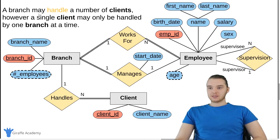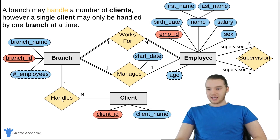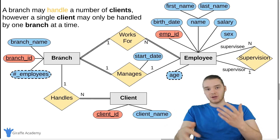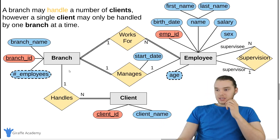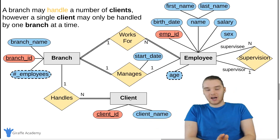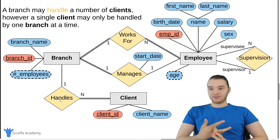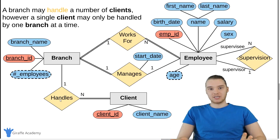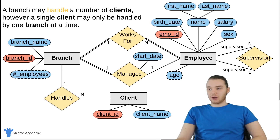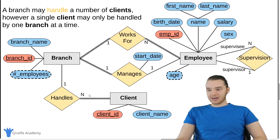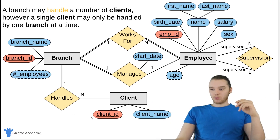Over here we have another relationship: a branch may handle a number of clients; however, a single client may only be handled by one branch at a time. So we have a relationship between branch and client. The client has total participation — every client must be handled by a branch. But the branch has partial participation — not all branches need to have clients. For example, a corporate branch or R&D branch might not work with clients. The cardinality: a branch can handle any number of clients, and a client can be handled by one branch.